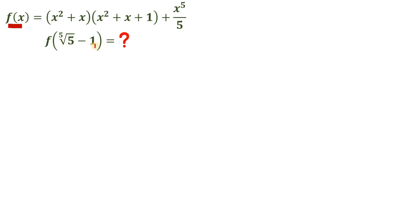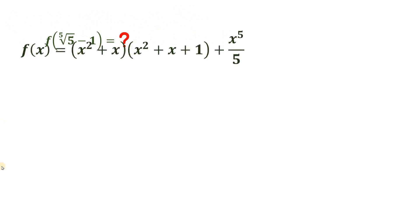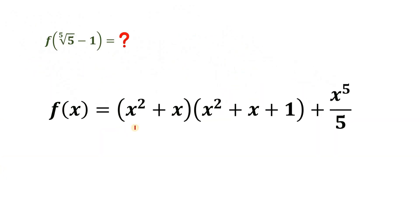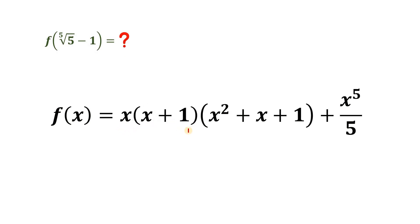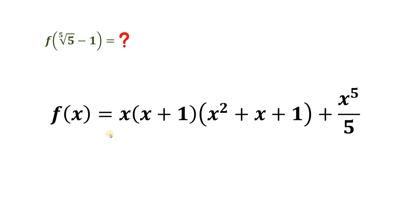How do we answer this kind of question? Here's one of the possible solutions. First, let's simplify f of x — notice we can factor out x in the expression x squared plus x. And if we do that, we get x multiplied by x plus 1. This is very important later on, so let's set aside this result.